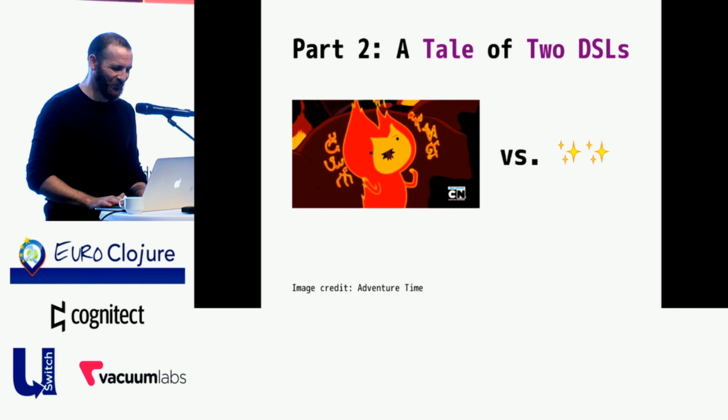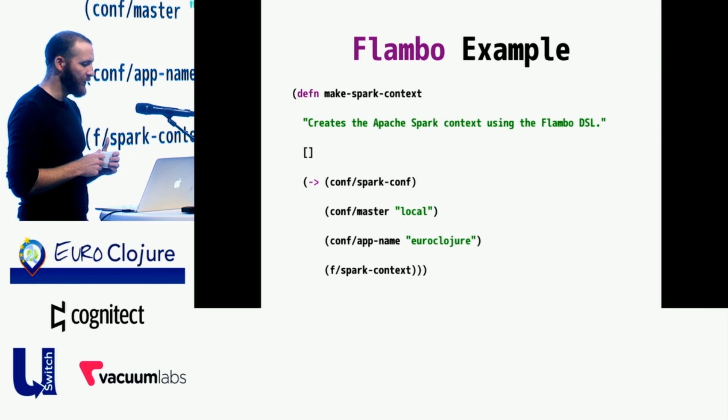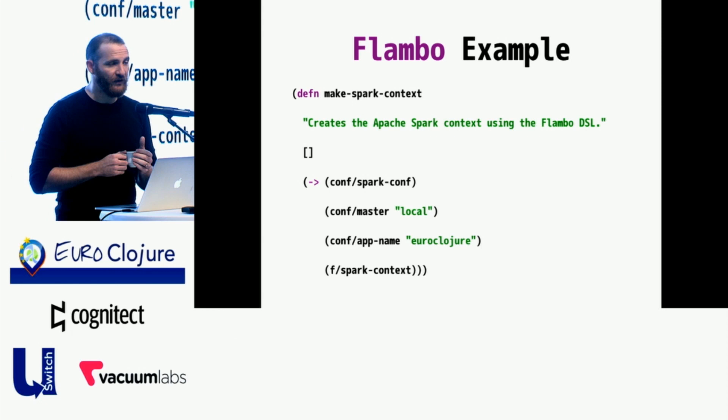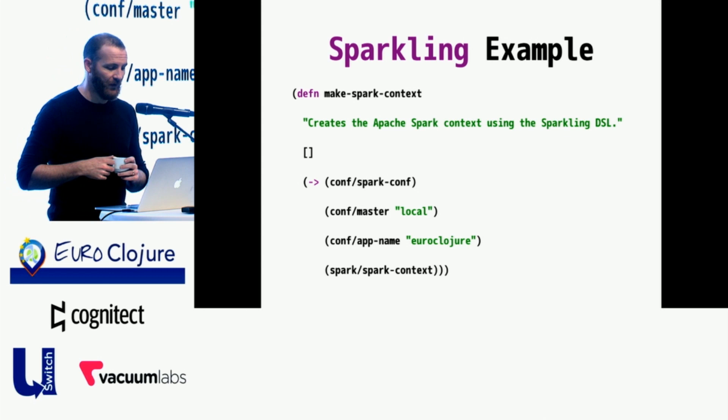Let's look at some code. I've been talking for long enough. So Flambo is the code you see up here on the screen. We need a Spark context to operate off of, so we do a little bit of configuration. We can use that Spark context later on. This is relatively straightforward. Conf comes from Flambo.Conf. F is the Flambo API. We have a Spark configuration. We're setting our master to be local. We're setting our app name as EuroClosure. We pass that into f Spark context to generate our Spark context. As you can see, the Sparkling example is devastatingly different. In fact, I think the only difference is the actual namespace.